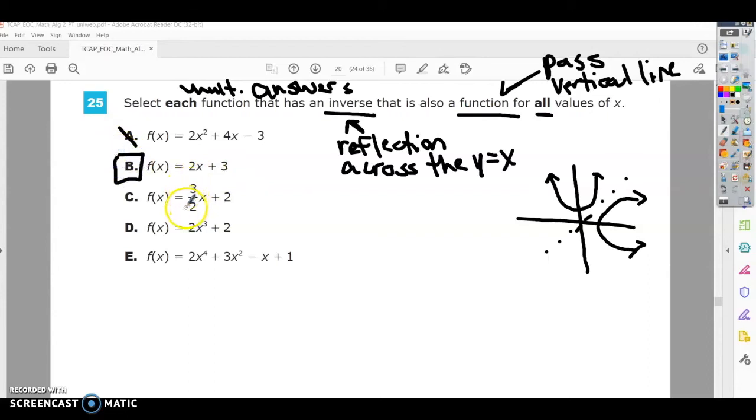Three halves is the same as 1.5, so this is also just a linear equation with a positive slope, which means it also will have an inverse that is a function.